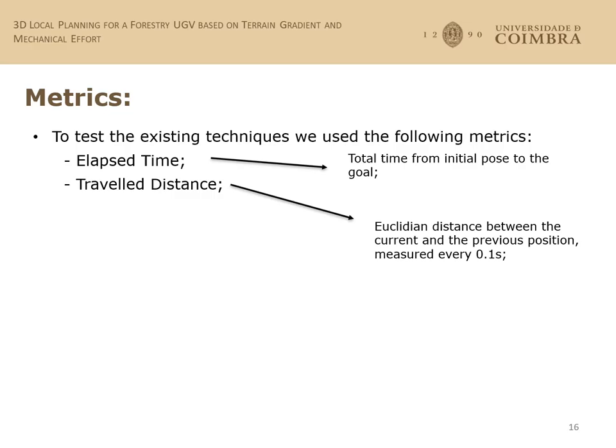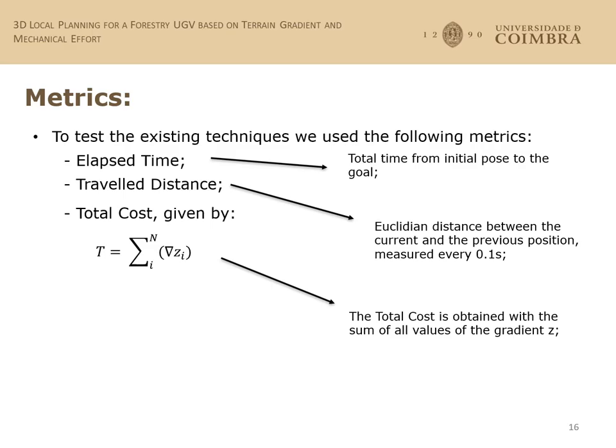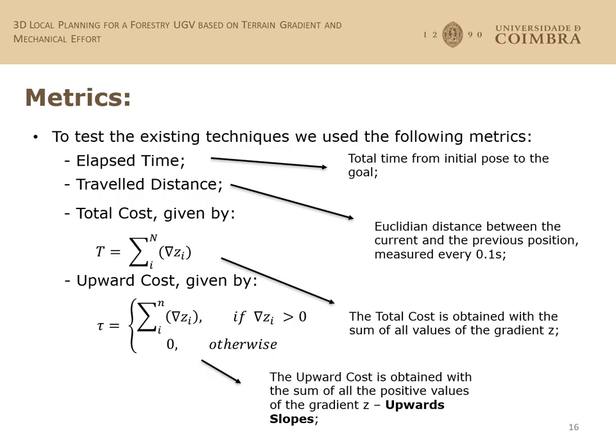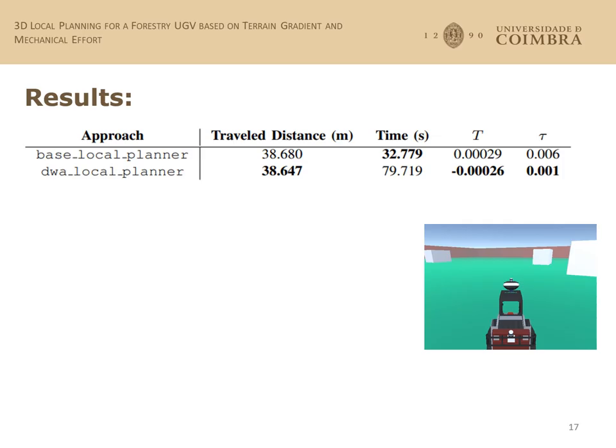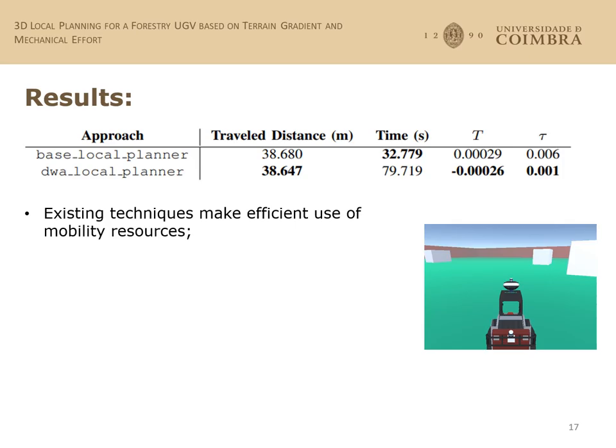To test and compare the existing techniques, we use the following metrics: elapsed time, the total time from initial pose to goal; travelling distance, the Euclidean distance between the current and previous position measured every 0.1 seconds; total cost, obtained with the sum of all values of the gradient Z; and upward cost, obtained with the sum of all positive values of the gradient Z, meaning only the upward slopes.